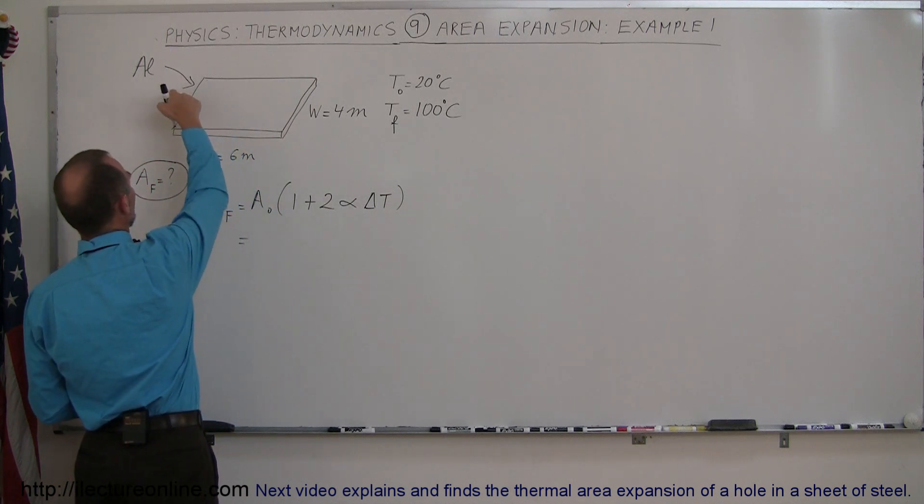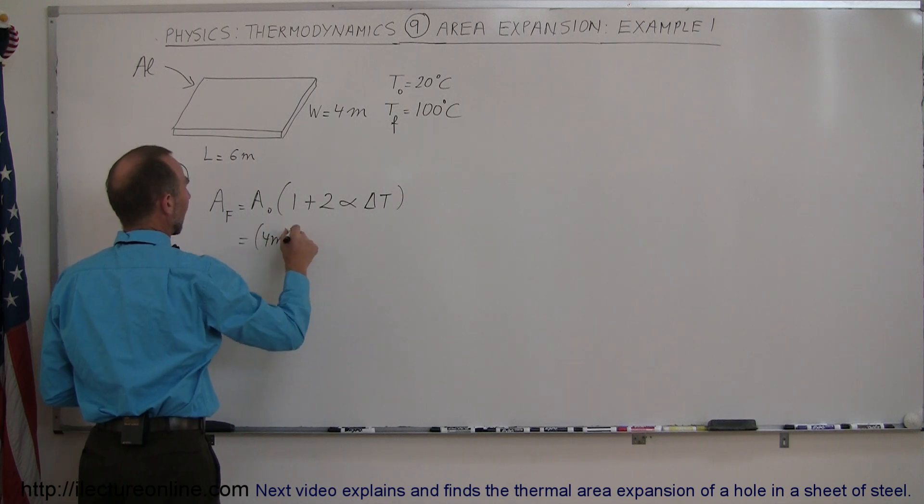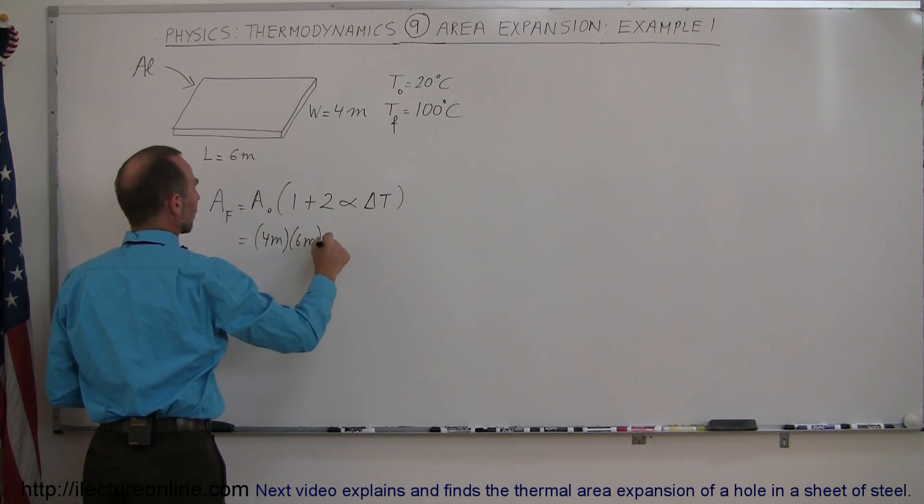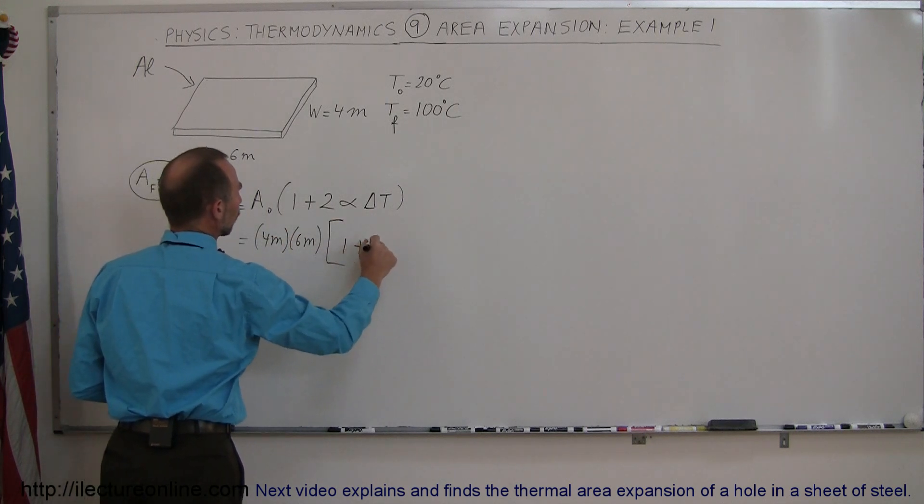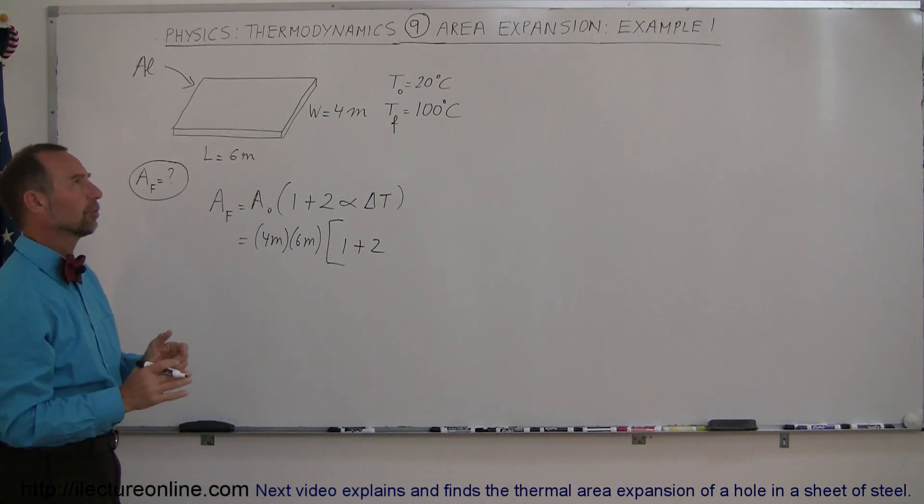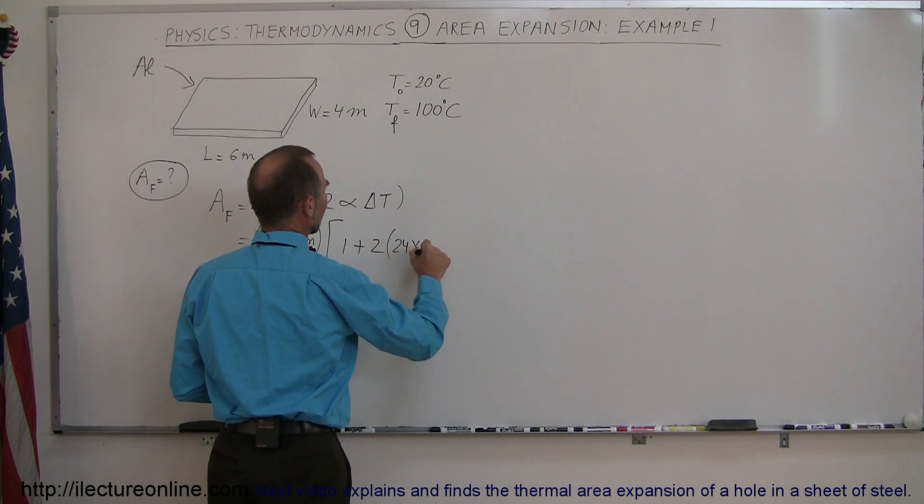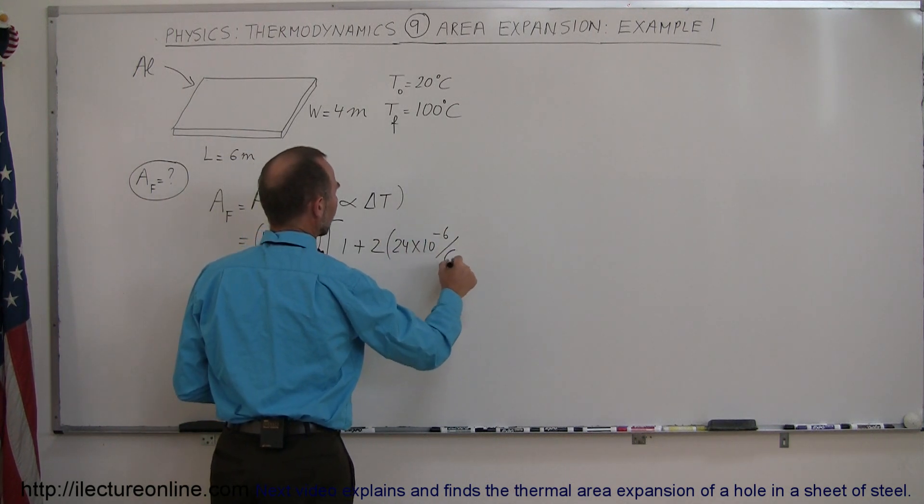First, the area. The area initially will be 4 times 6 meters, so it would be 4 meters times 6 meters for the original area, times 1 plus 2 times the linear coefficient of expansion for aluminum, which if you remember right, that would be 24 times 10 to the minus 6 per centigrade degree.